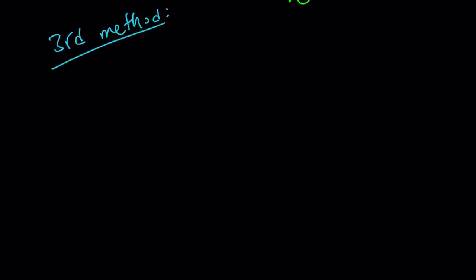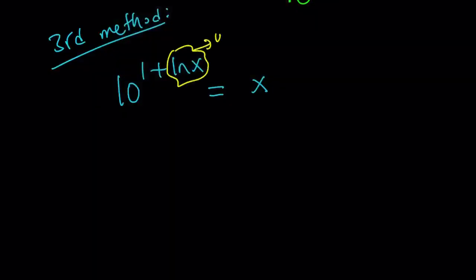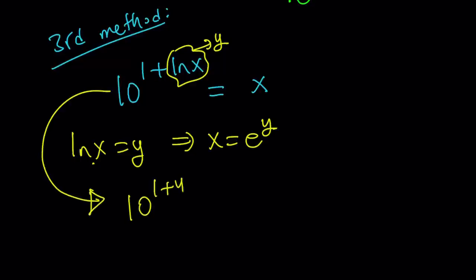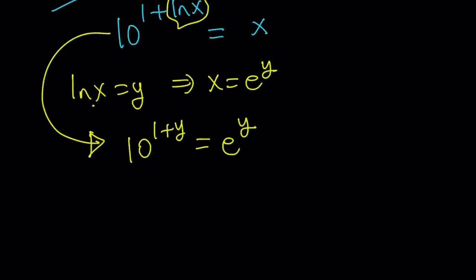So the third method uses substitution, and that makes a lot of sense here because we have a variable in the exponent. So let's go ahead and call this y. So ln x equals y. This implies, because the base is e, that x equals e to the power y from the definition of logarithms. By replacing ln x with y we get the following: 10 to the power 1 plus y equals x, which can be written as e to the power y. So in other words, we get rid of the logarithm and this turns into a purely exponential equation.